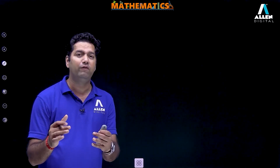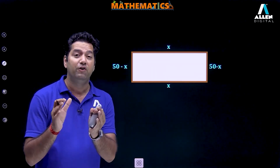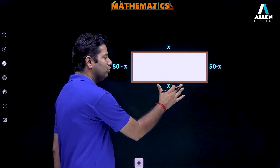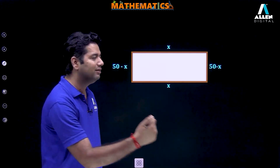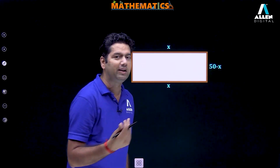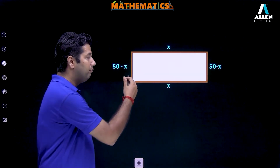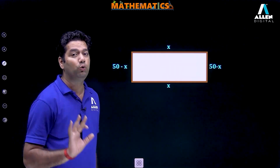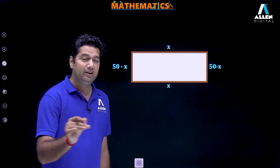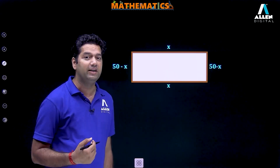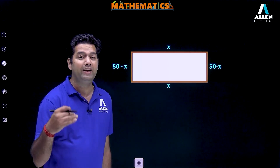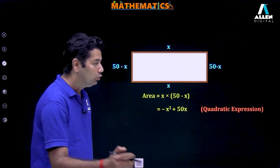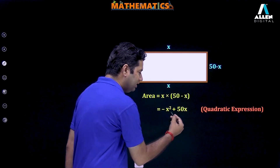But what will be the appropriate approach by which we can calculate this? Let's suppose one dimension is equal to x and the other is equal to 50 minus x. The dimensions are x and 50 minus x, but the length of the rope is fixed at 100. If I want to calculate the area, that will be equal to x into (50 minus x), which equals minus x square plus 50x. So a quadratic expression is formed here.